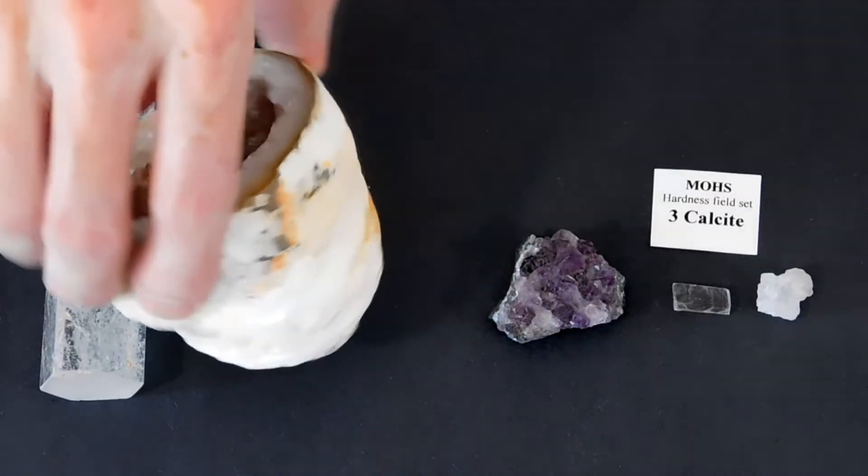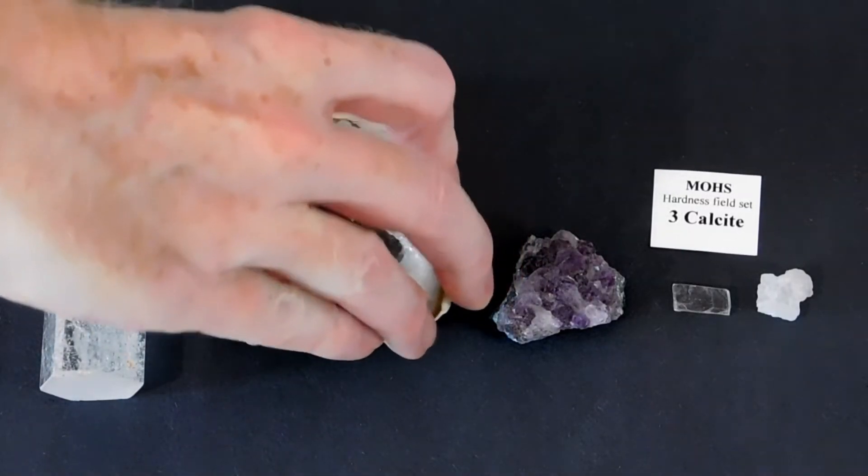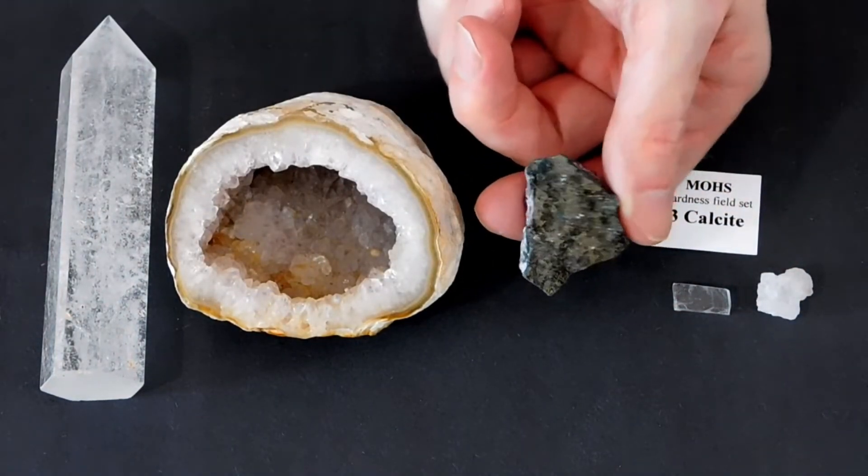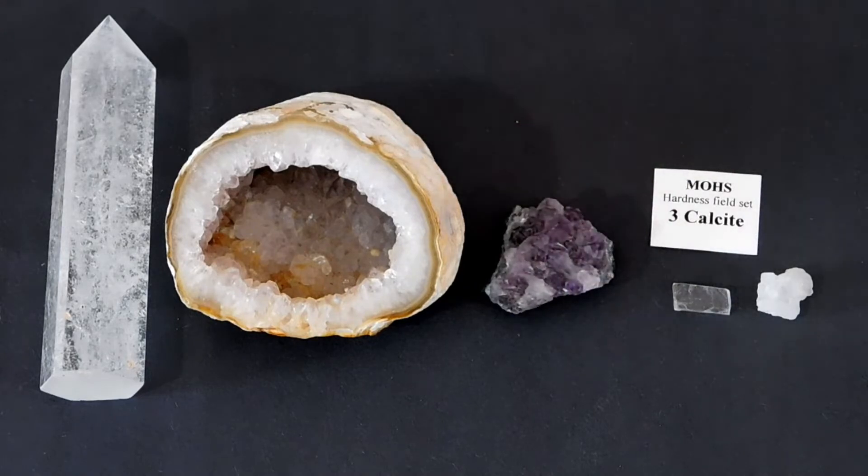The rocks on the Mohs hardness scale are all minerals, which means they were made in nature and are pure crystals. These are some common crystals in nature, which can be alone or inside of the rocks.